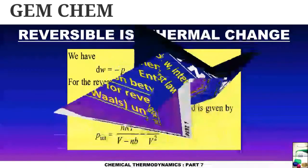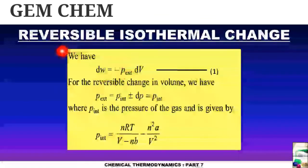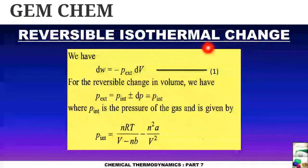Now let us start. For reversible isothermal change we have dw equals to minus p exterior dV. And for the reversible change in volume we have p external equals to p internal plus minus dp, which is near about p internal. Now we know for the Van der Waals gas, p internal is the pressure of the gas and is given by nRT by V minus nb minus n square a by V square.